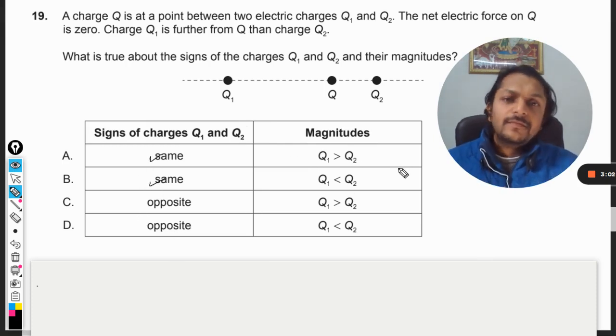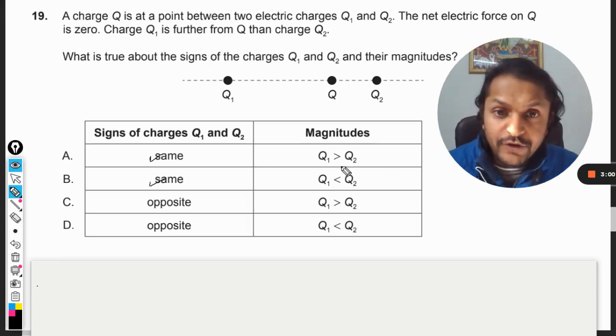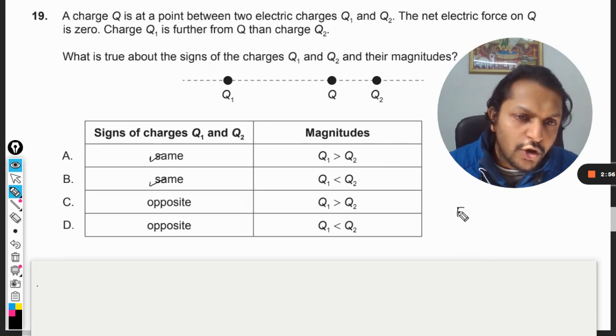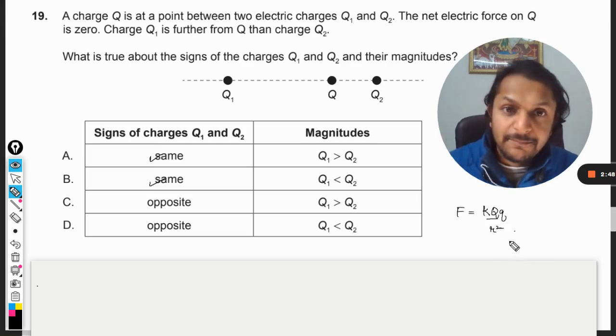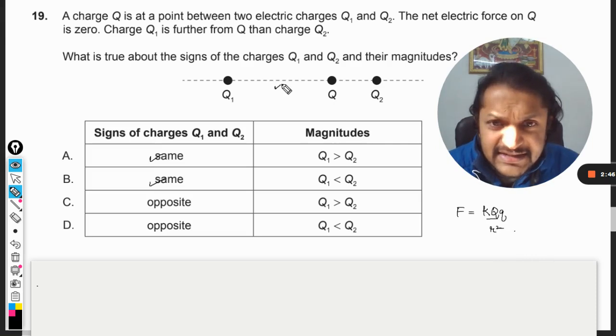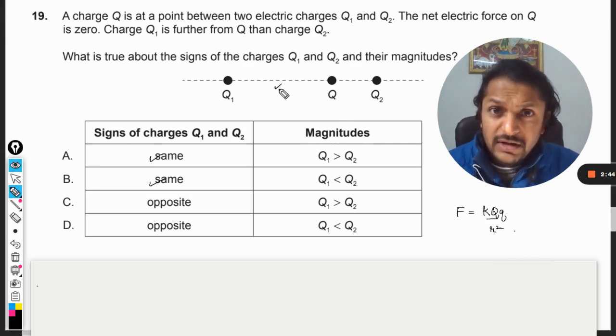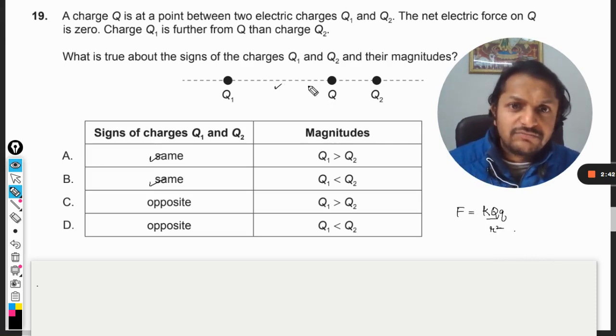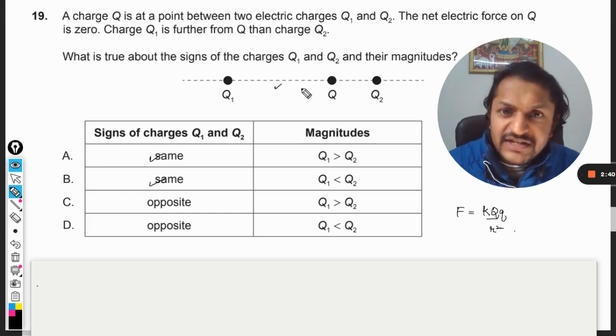Now what about the magnitudes? For the charges, we know that by Coulomb's law, F is equal to k q into q divided by r square, that is the square of the distance between them. If this distance is more and forces are equal, it only means that this charge have to be even bigger.